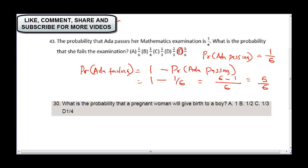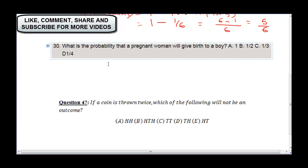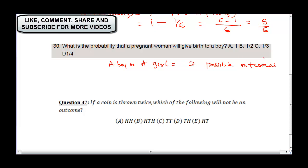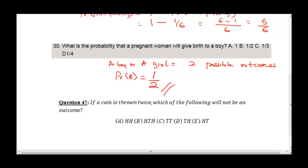What is the probability that a pregnant woman will give birth to a boy? When anybody gives birth, they could either have a boy or a girl — that gives two possible outcomes. So there are two possible outcomes: a boy or a girl. The probability of having a boy is one out of two. Likewise, the probability of having a girl is one over two. The correct answer here is B.